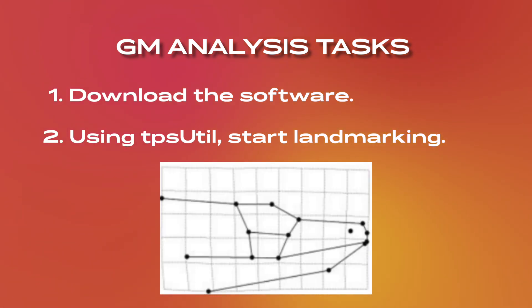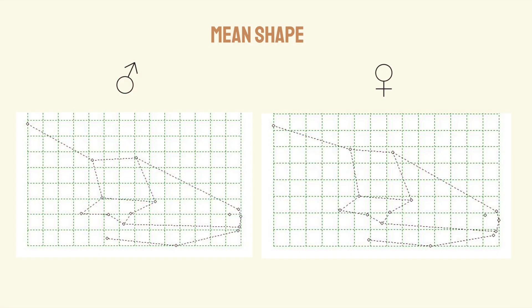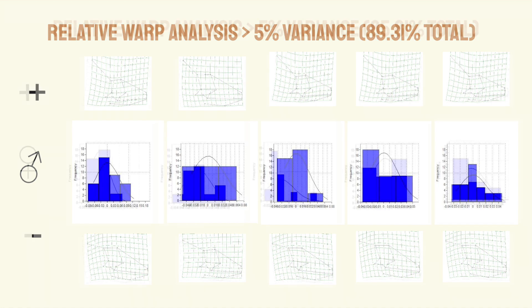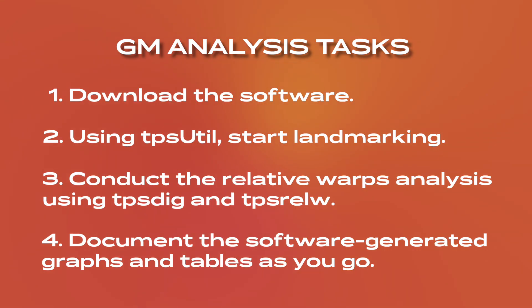Do this for all specimens or pictures. Step three: conduct the relative warps analysis using TPSdig and TPSrelW. Through looking at all the links files, these software determine the mean shape. They also bend and warp the shape across different positions, depending on how many points you have, to see possible variations. Document the software-generated graphs and tables as you go, keeping a Google Doc at the side, since the software doesn't save these.